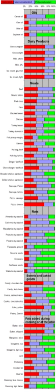There are strong, consistent, and graded relationships between saturated fat intake, blood cholesterol levels, and the mass occurrence of cardiovascular disease. These relationships are accepted as causal. Many health authorities such as the American Dietetic Association, the British Dietetic Association, American Heart Association, the World Heart Federation, the British National Health Service, among others, advise that saturated fat is a risk factor for cardiovascular disease.